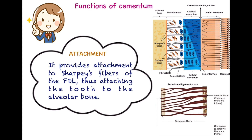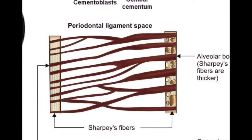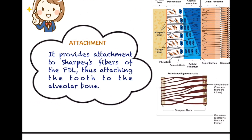The first and foremost function of cementum is attachment — it provides attachment to the Sharpey's fibers of the periodontal ligament, thus helping in attaching the tooth to the alveolar bone. Sharpey's fibers are fibers which are partly embedded into the alveolar bone and partly embedded into the cementum. These are derivatives of type 1 collagen fibers. Towards the cementum part, the fibers are much thinner in diameter compared to the alveolar bone part where they are lesser in number but greater in diameter.